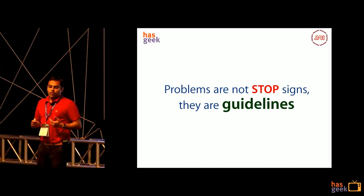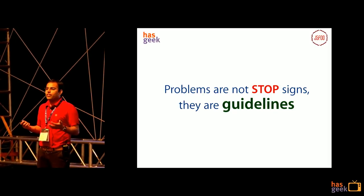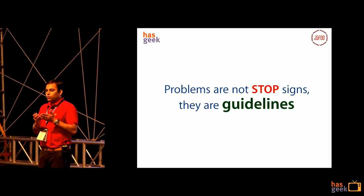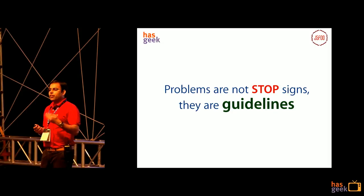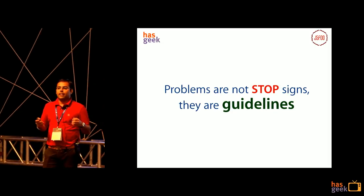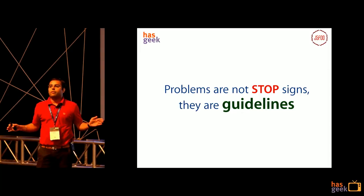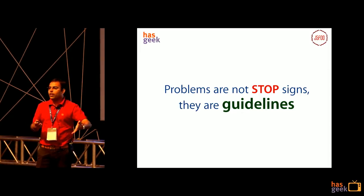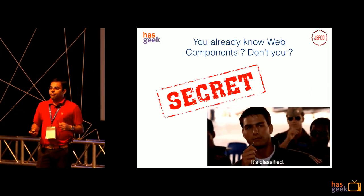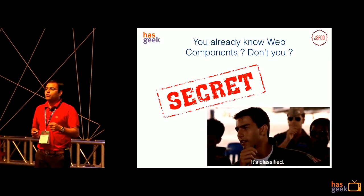Problems are not stop signs, they are guidelines. We should not see the problems like we have to just deal with it or stop learning new frameworks. The community thought we'll use these problems to create something new, and someone somewhere at Google or in the community proposed a new guideline: why don't we make this interoperability or standardization across the browsers so that no one has to face these problems. Then came web components — but there's one secret which I want to tell you which all the browsers never ever told you.